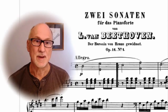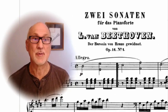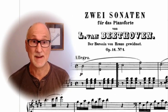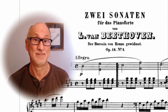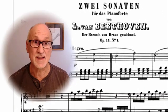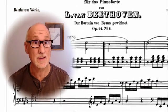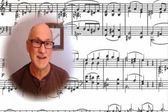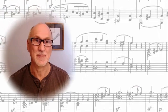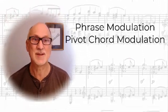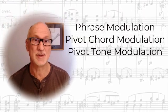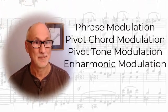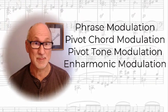Modulation is a shift from one key to another in a piece of music, and there are many ways to do this. Many modulations occur between closely related keys — keys that either share the same key signature or differ by only one accidental. In this video we'll look at Beethoven's Piano Sonata, Opus 14, Number 1, Movement 2. It's one of my favorite pieces to illustrate modulation because it contains at least four types: phrase modulation, pivot chord modulation, pivot tone modulation, and enharmonic modulation. Not bad for one three-and-a-half-minute piano sonata movement.